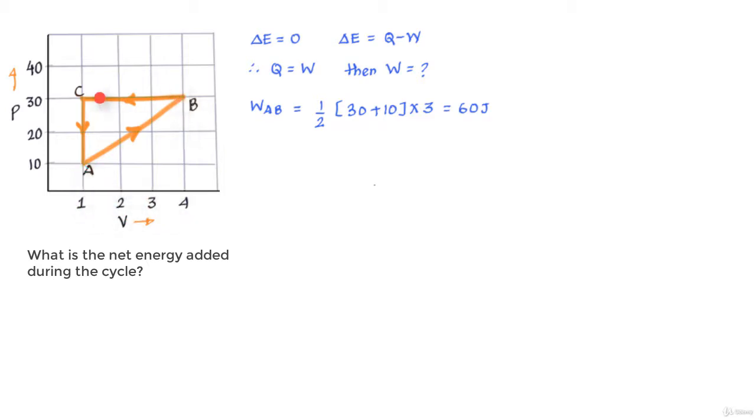Now from B to C we can see that the volume is decreasing and therefore negative work is happening. Since this is a constant pressure process we can straight away use the formula work done is equal to P delta V, or work done between B and C is 30 into V final minus V initial which is equal to 30 into 1 minus 4 which is equal to minus 90 joules.